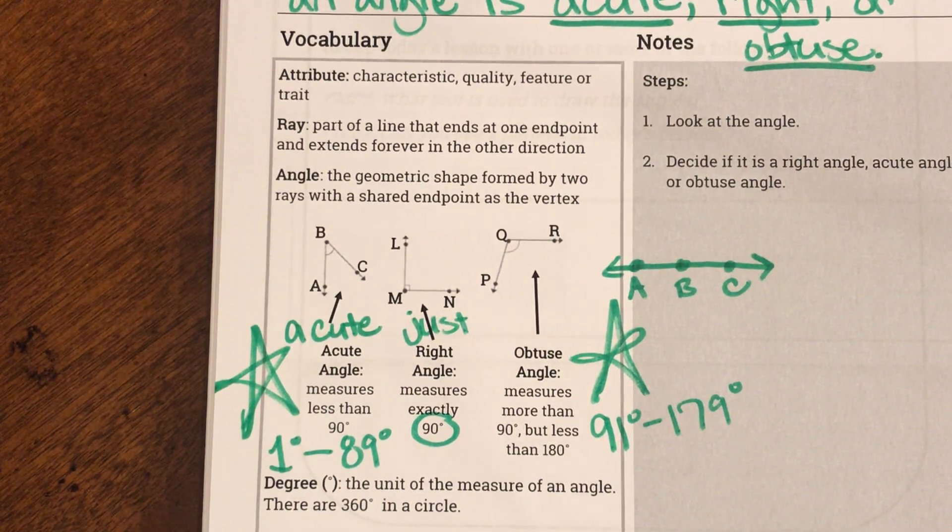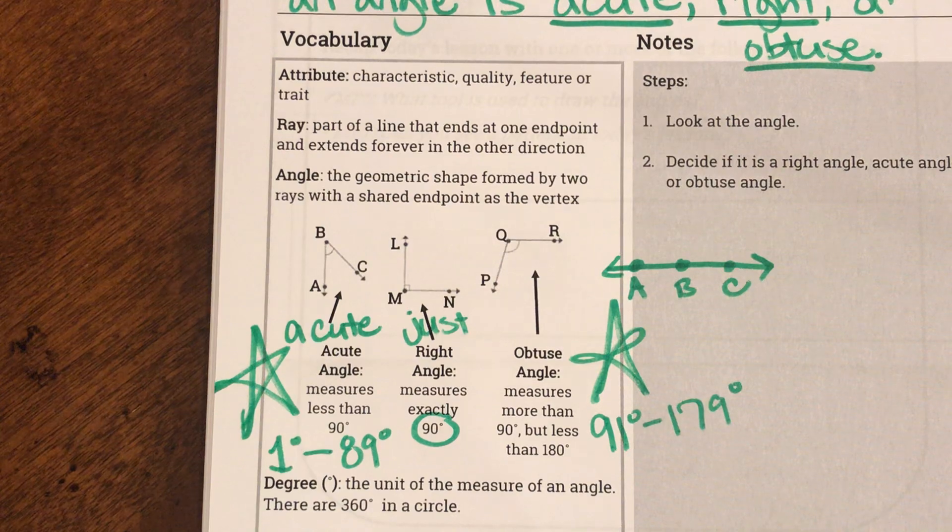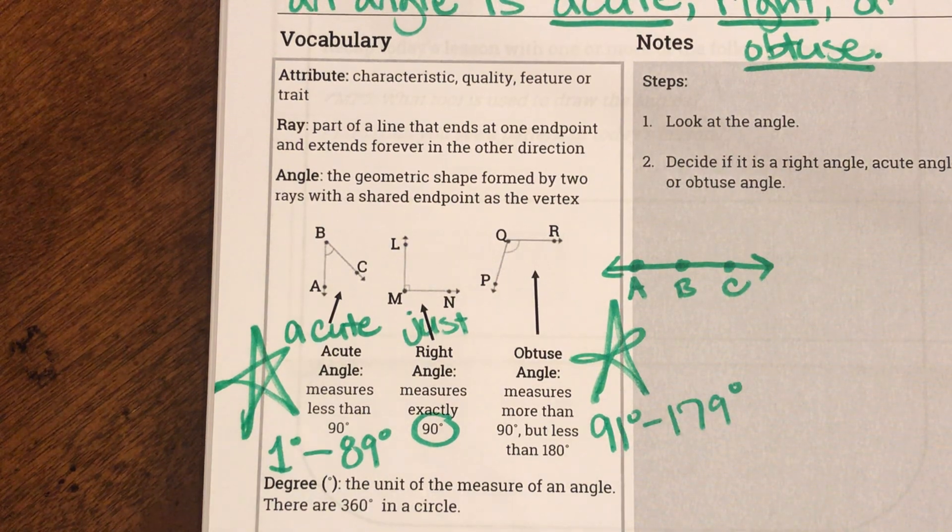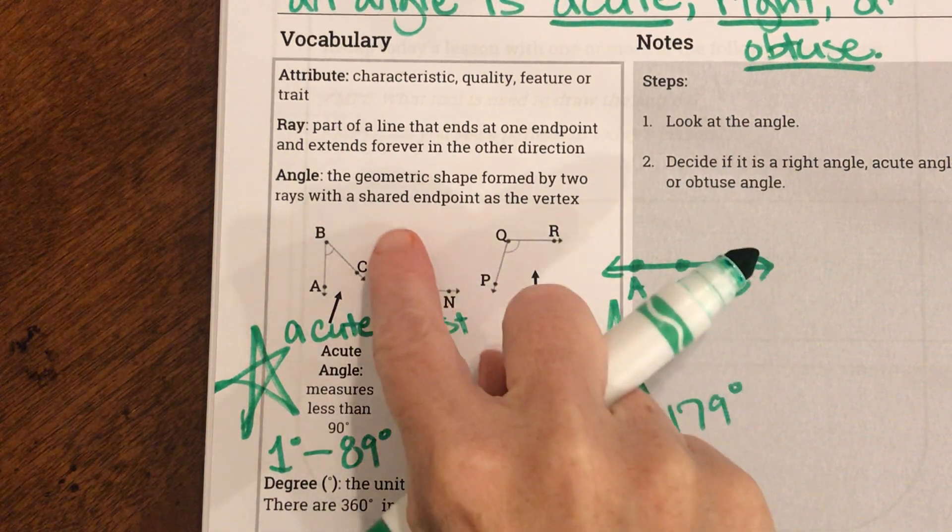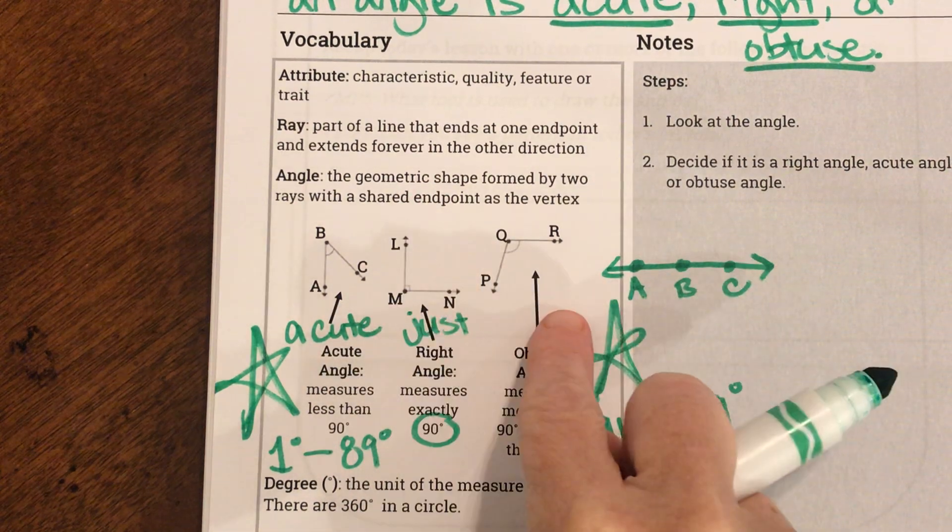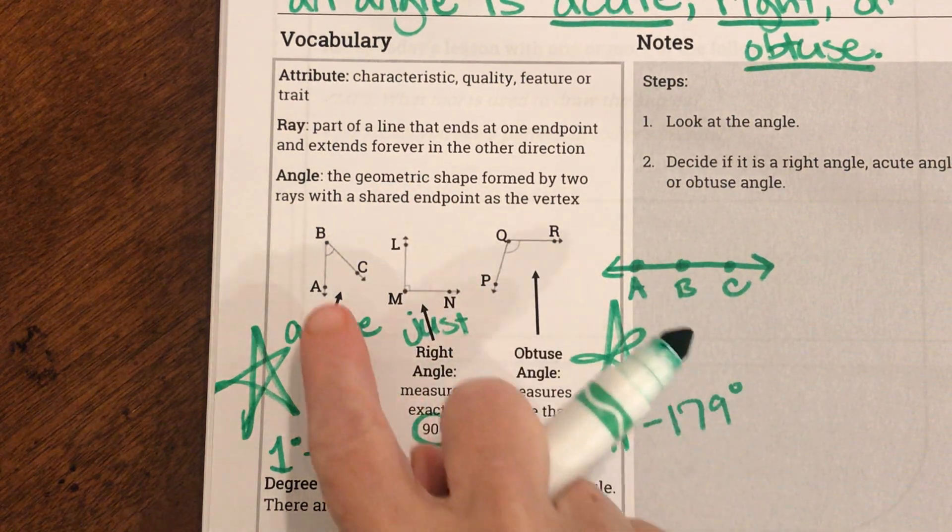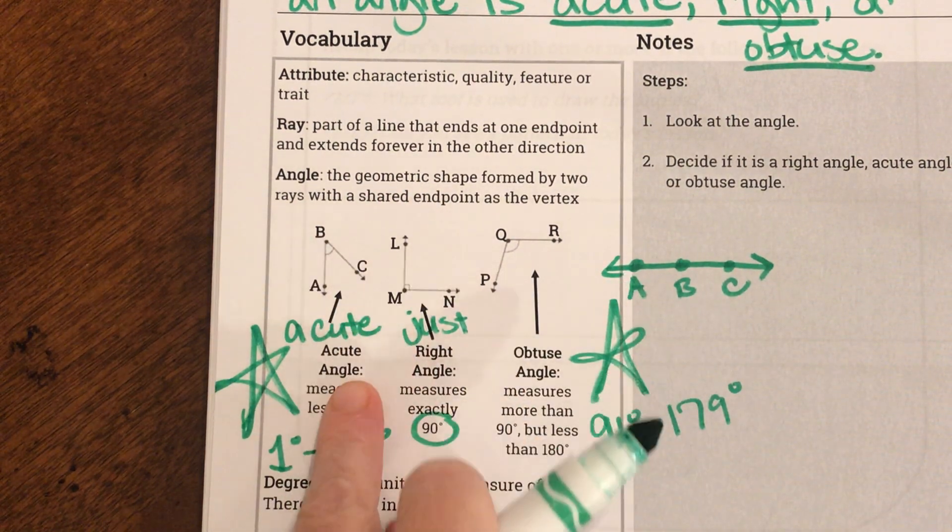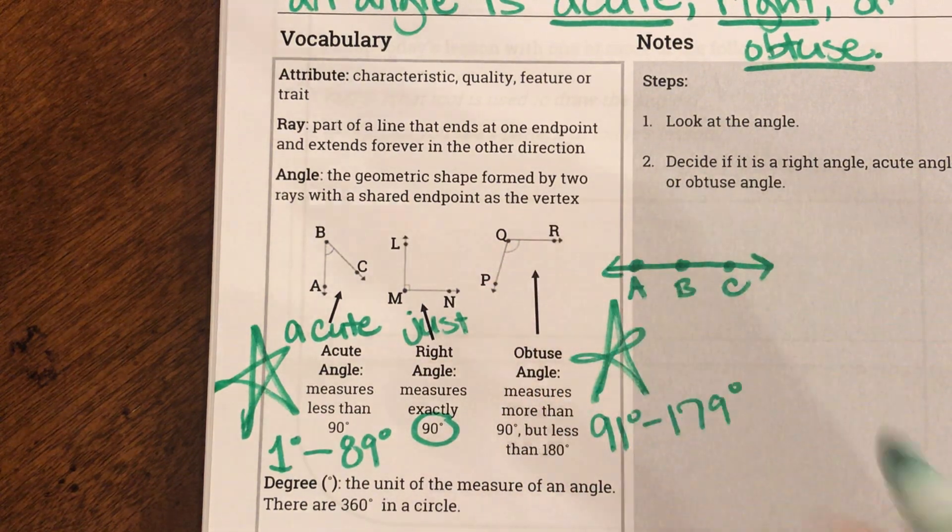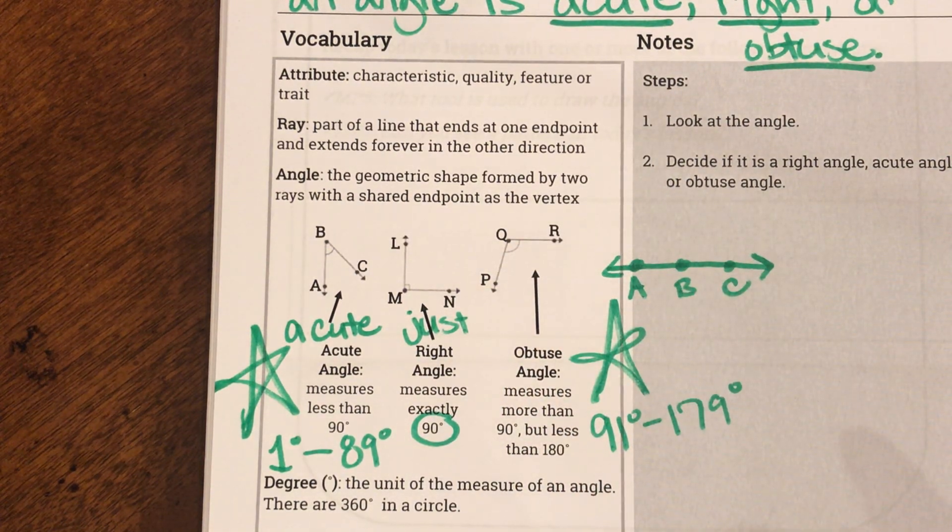So our goal today, or our objective today, is going to be to be able to look at an angle and decide, is it just right, perfectly right, or is it a cute little, a cute angle, or is it an obtuse, which is larger?